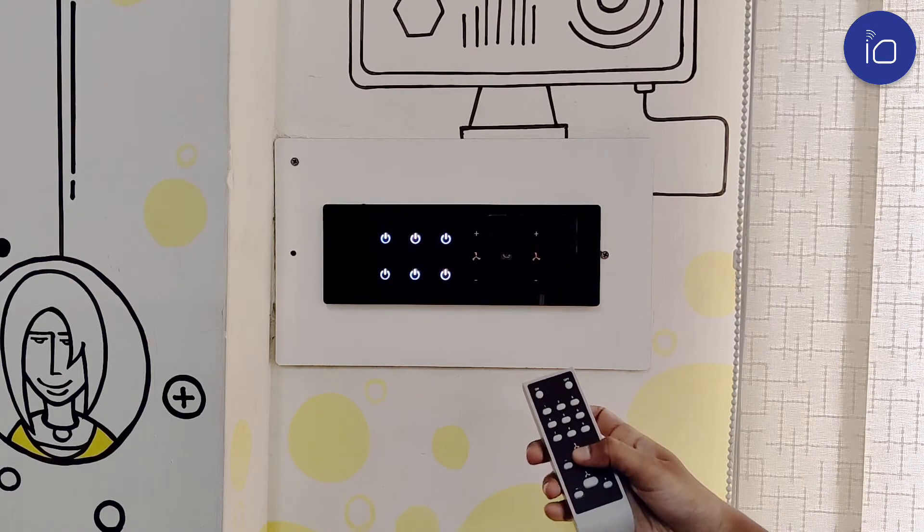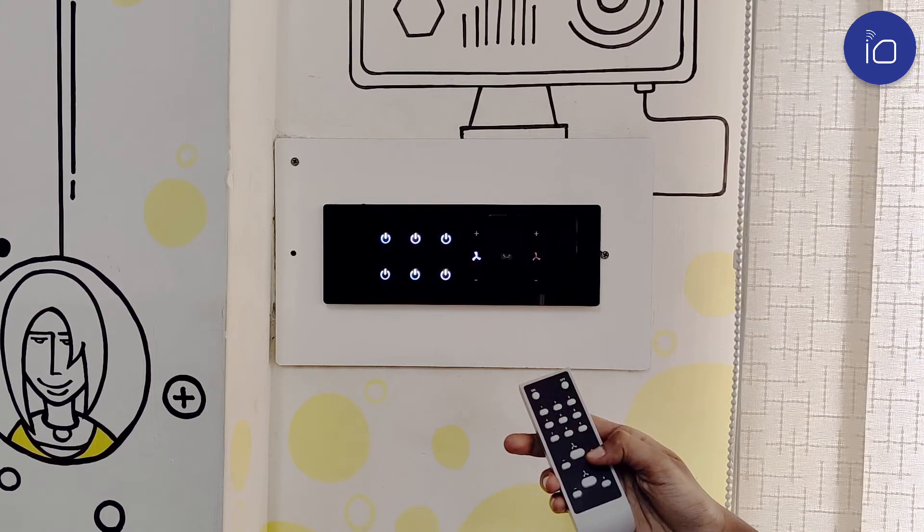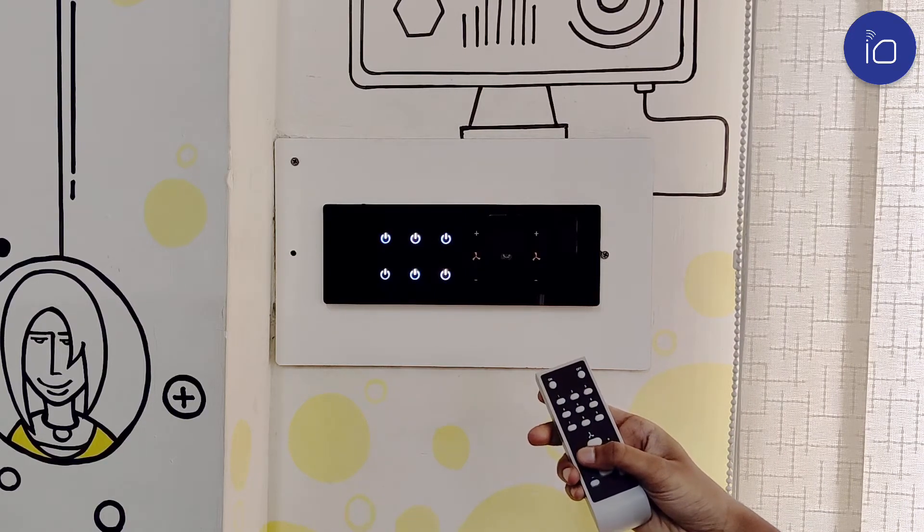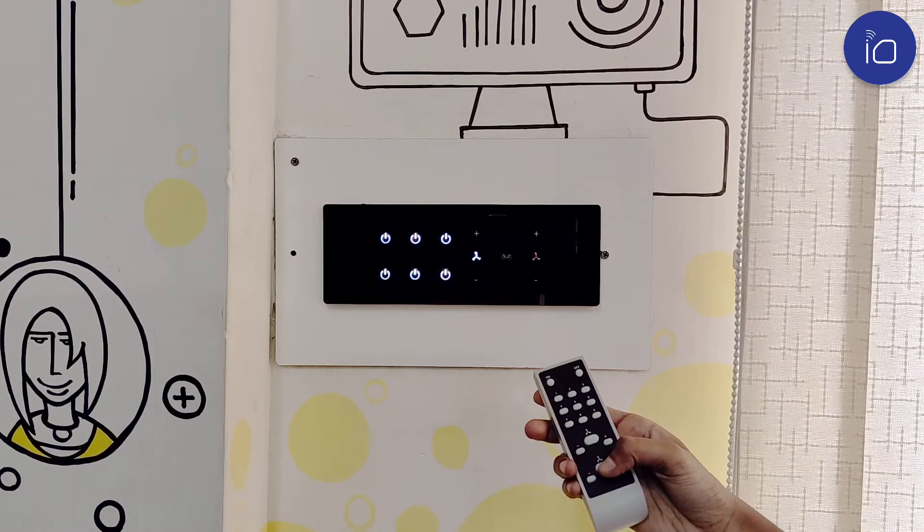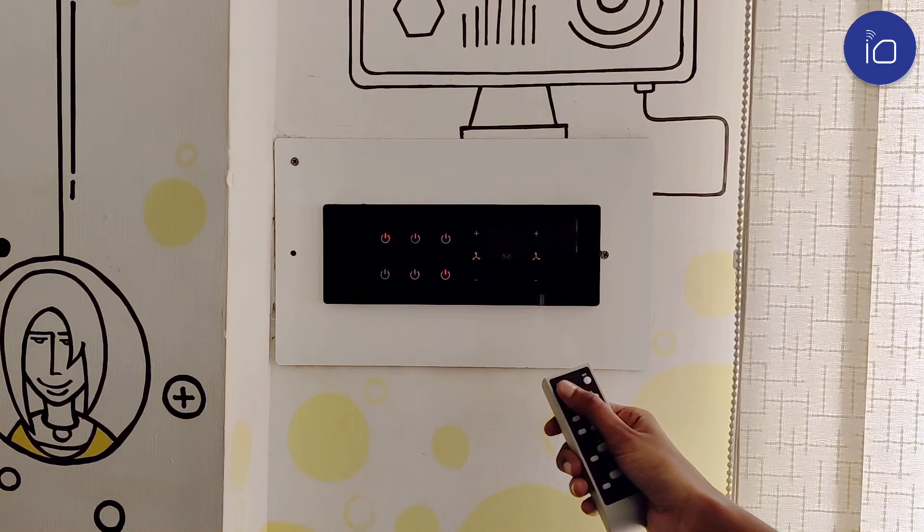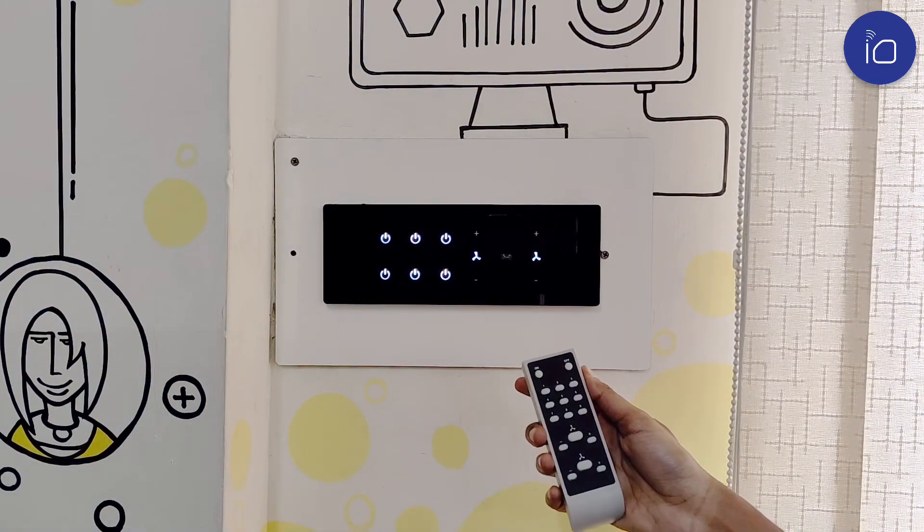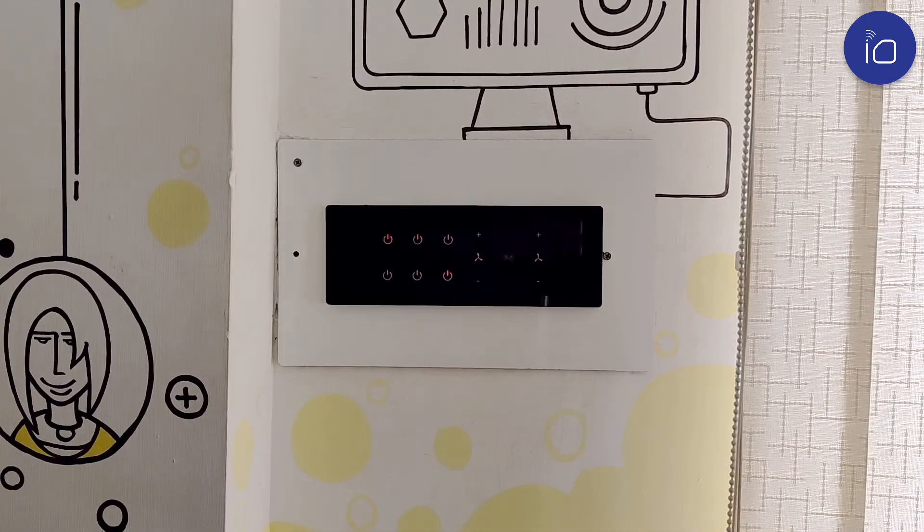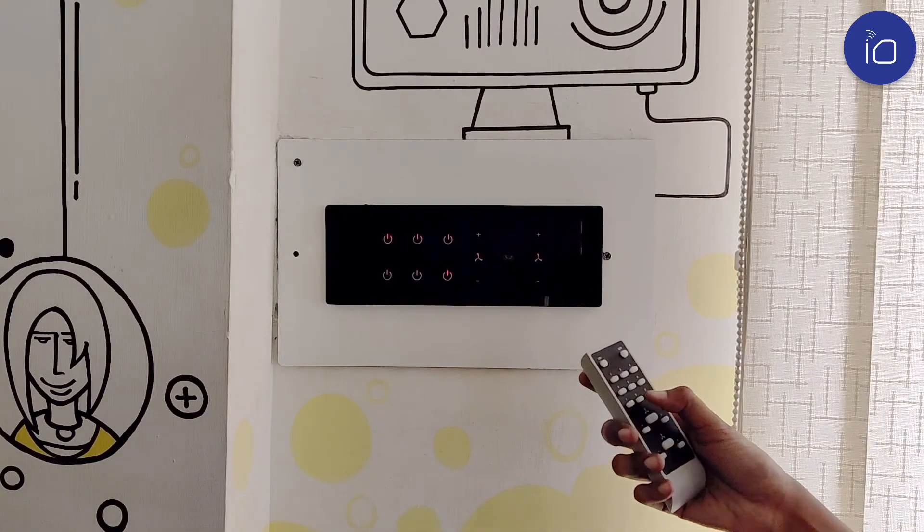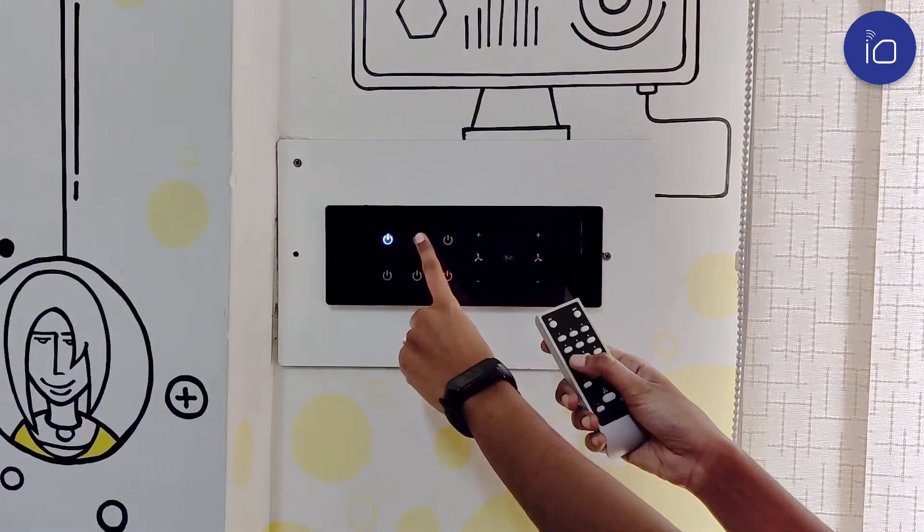The first six buttons control the six lights. The fan button controls the fan, and the plus and minus buttons increase or decrease the fan speed. The master off and master on buttons turn off or turn on all the switches in the panel at the same time. You can also configure multiple switches to work with a button.